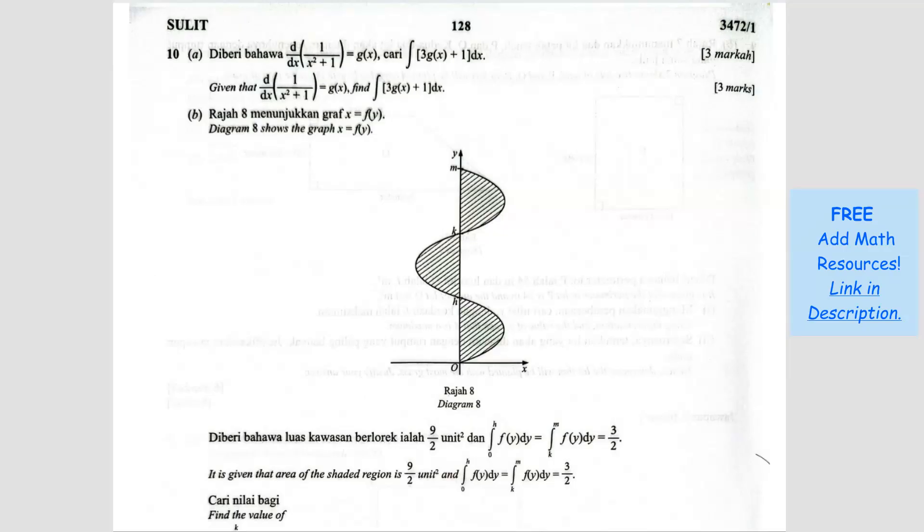They want us to find, question A, they want us to find the integral of 3g(x) plus 1. So we can do separately, that means integrate 3, the 3 is not important, you can just write it outside. Plus, so the 1 will be, you integrate 1 dx.